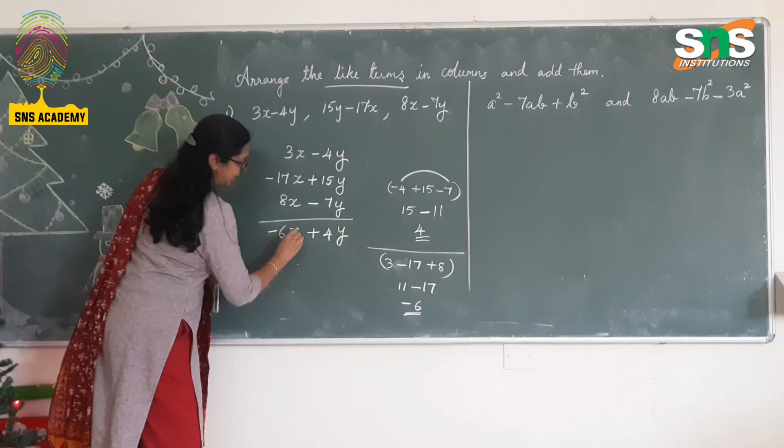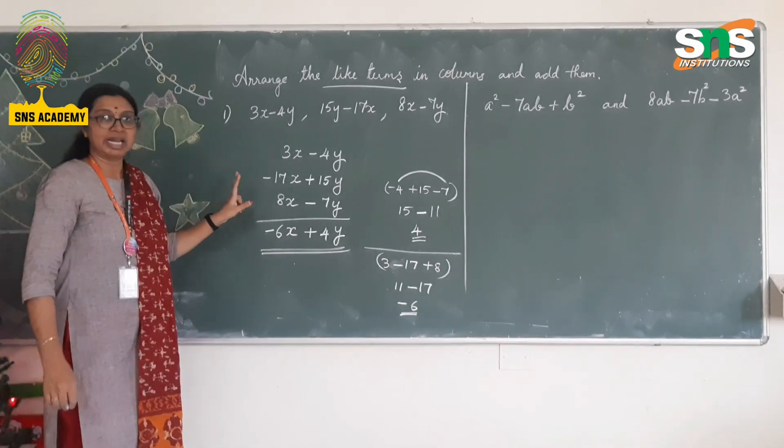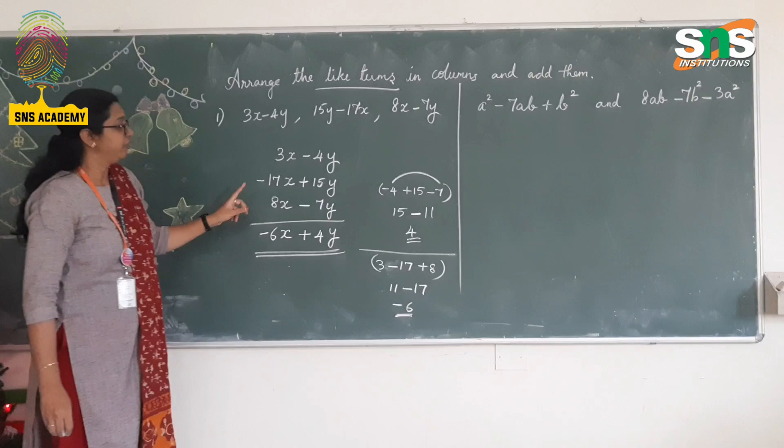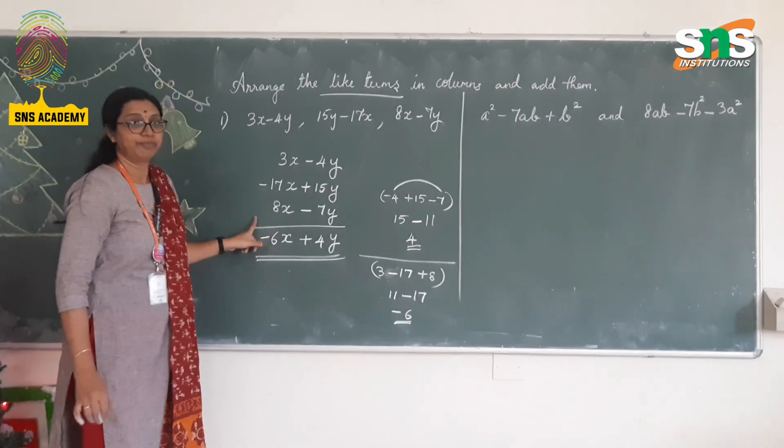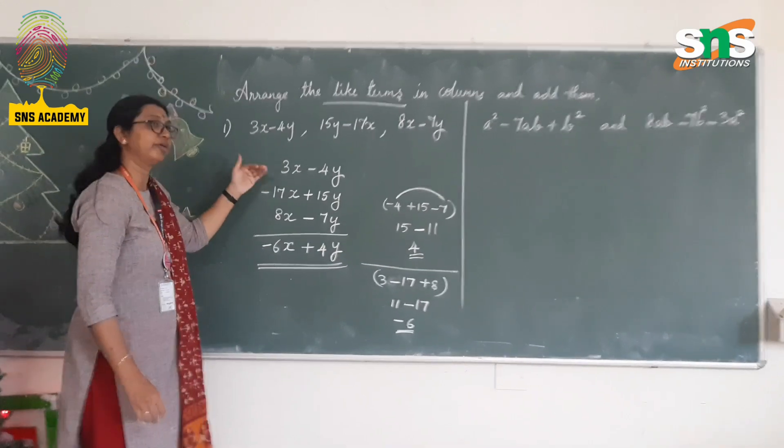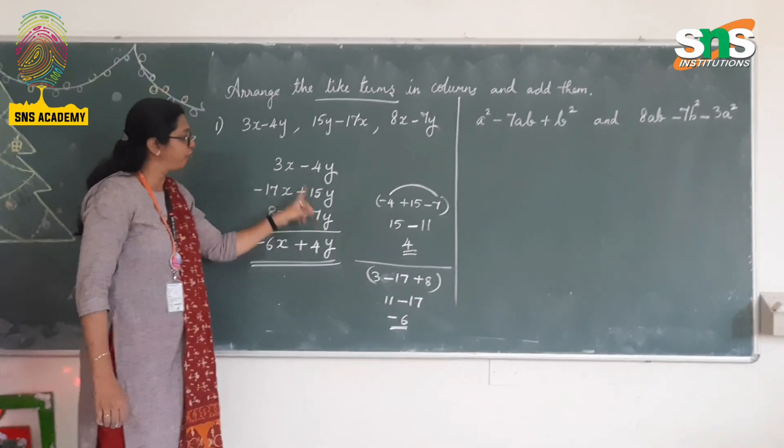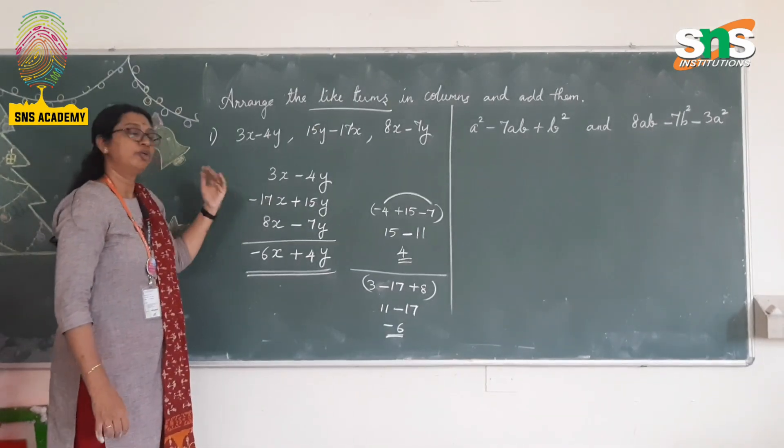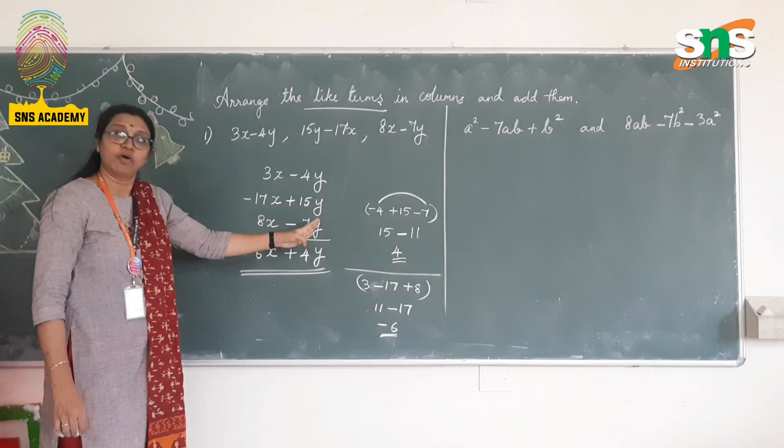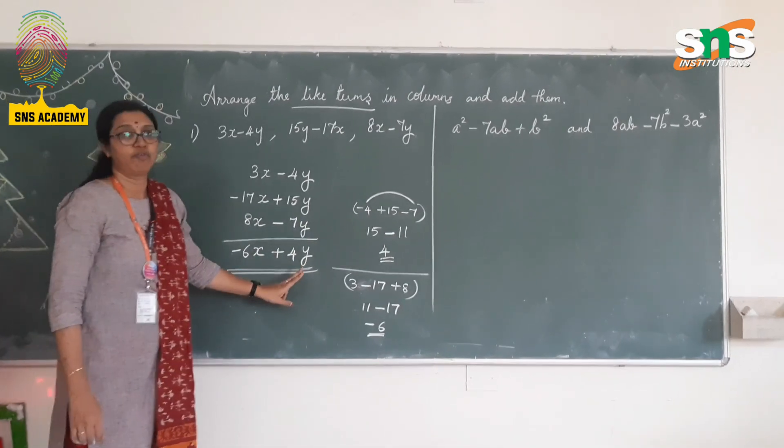Negative 6x. Is this clear? This is how you will arrange them in like terms and add them. Before adding, you should check for the coefficient with the correct sign. Is it clear? And you can add this term. You can add 3x, -17x, 8x, and then also you can go for the y terms. Because you are going to add it as like terms. No issue with whether you are adding this first or that first. So this is the answer: -6x + 4y.